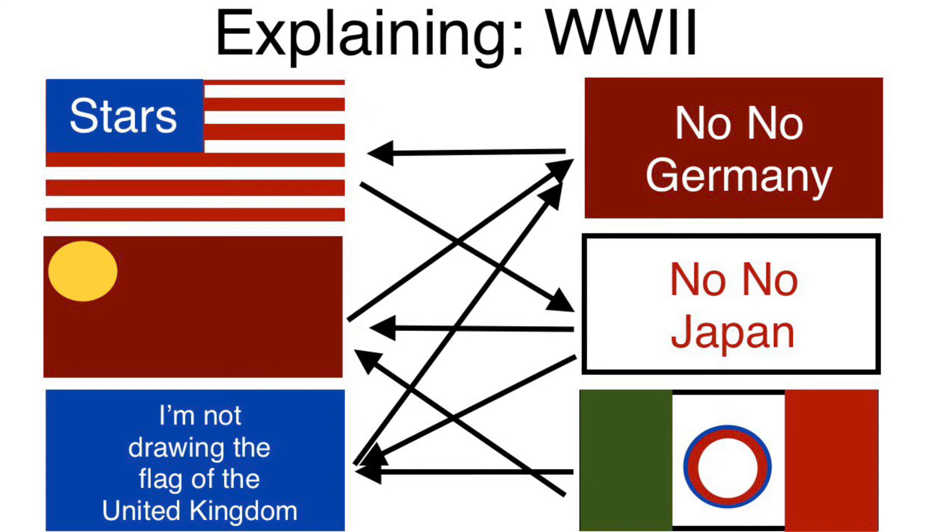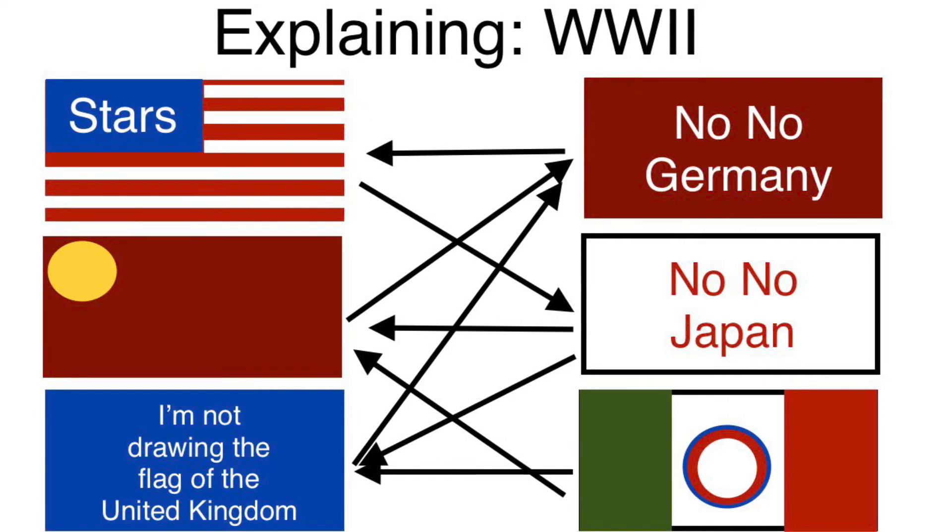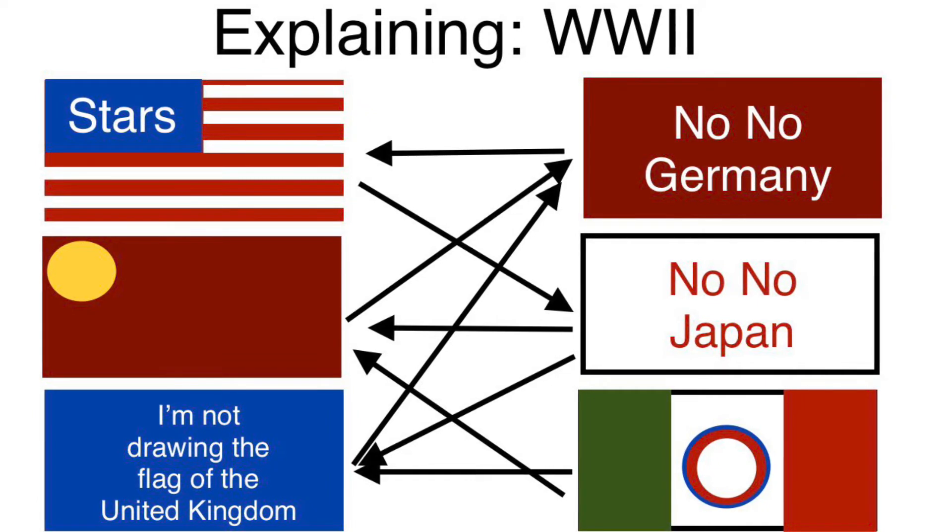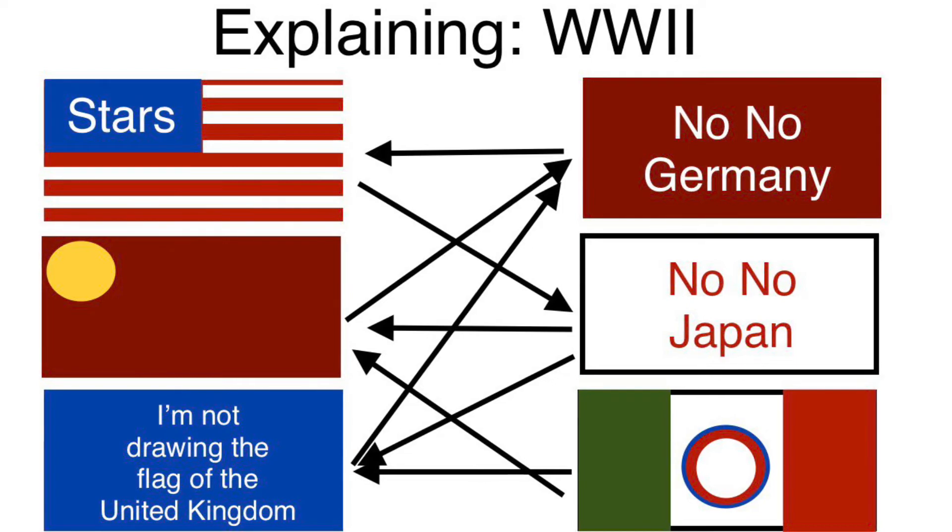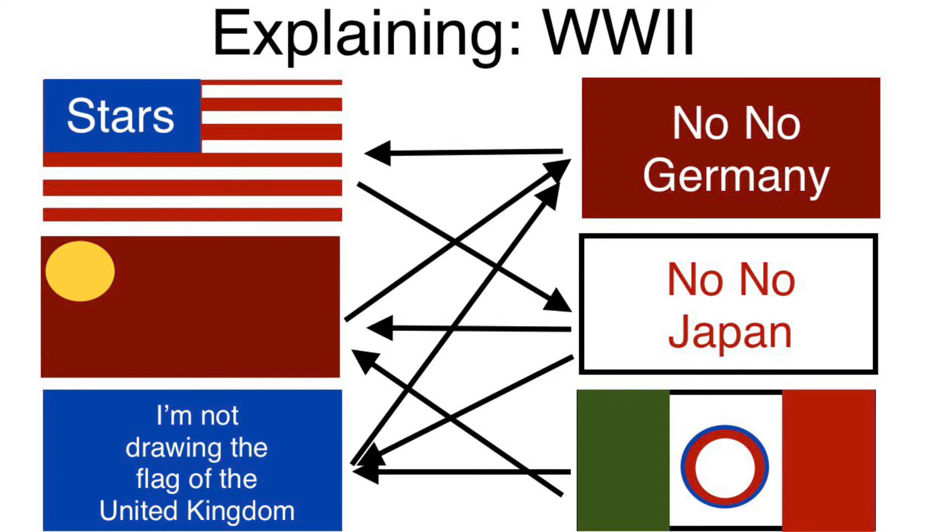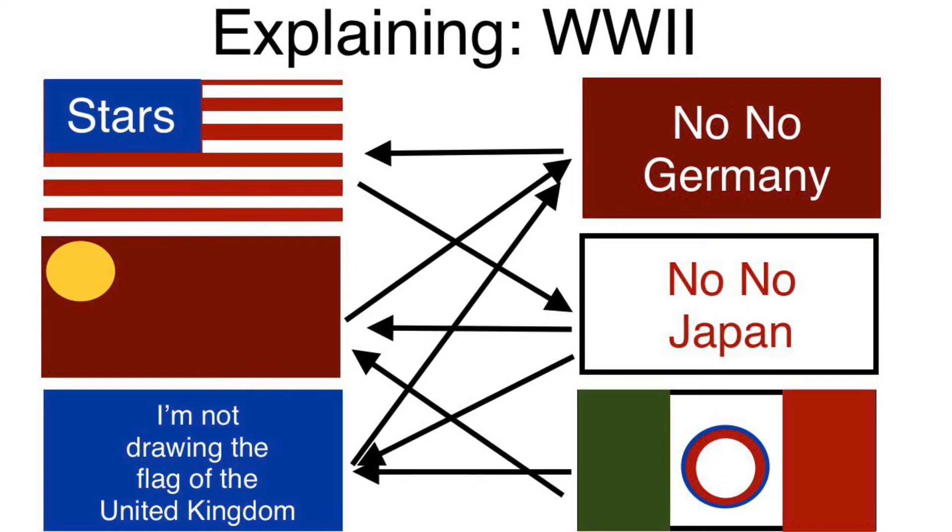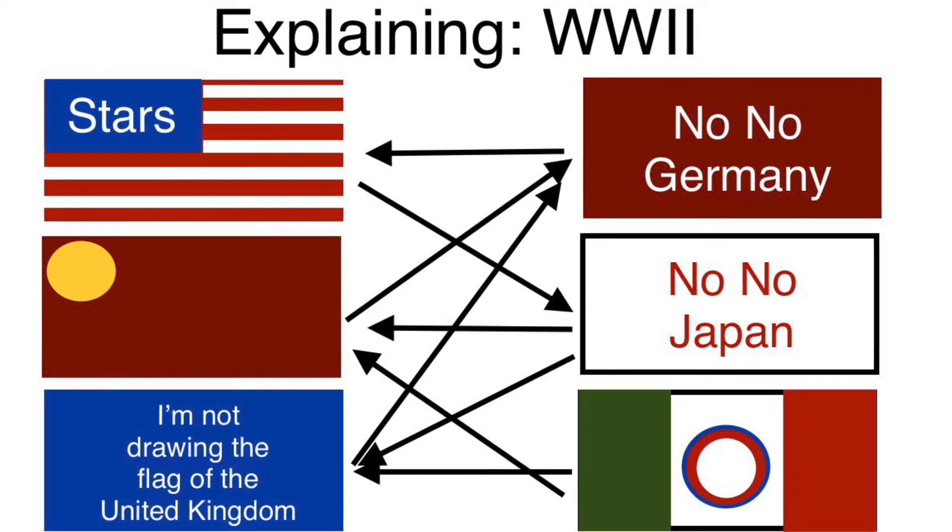Things would become even worse for the Axis when Germany decided to declare war on the U.S., even when they didn't need to. With the U.S. now part of the war, the Axis powers would have to fight against the Allied side, consisting of the USSR, America, and the U.K.